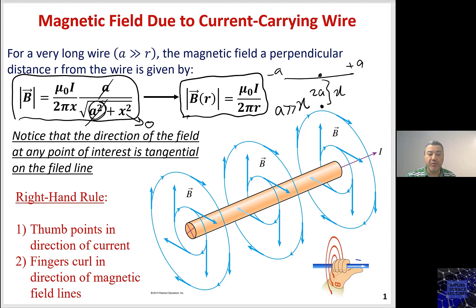So the magnitude is given by μ₀I divided by 2πr. In this case, r is the radius — all points from the center are at distance r. As you can see, the magnetic field has the same magnitude, and the direction of the magnetic field is always tangential on that field line.